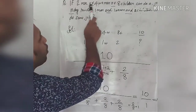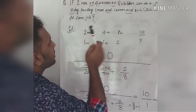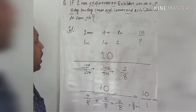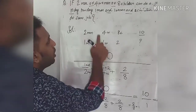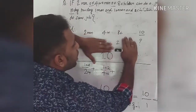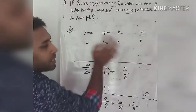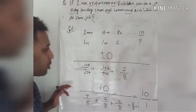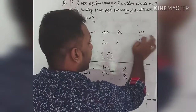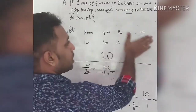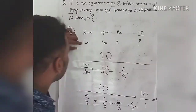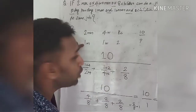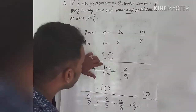If 2 men or 4 women or 8 children can do a piece of work in 10 days, then how many days are required for 1 man, 1 woman, and 2 children to do the same job? The days given are 10, 10, and 10. The denominator is 1 divided by 2, plus 1 divided by 4, plus 2 divided by 8.